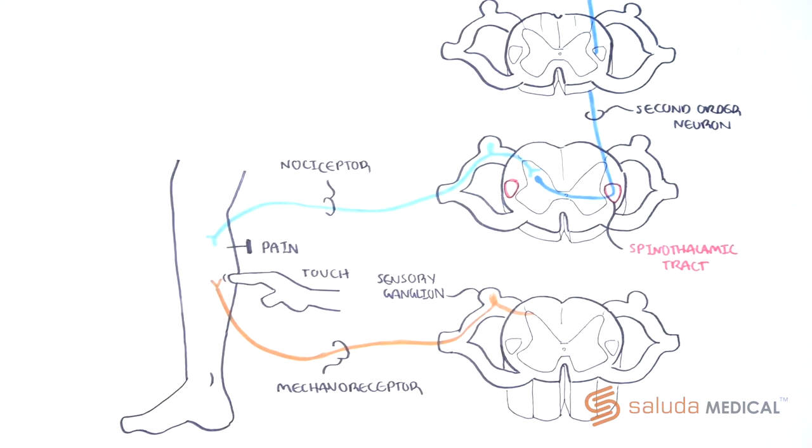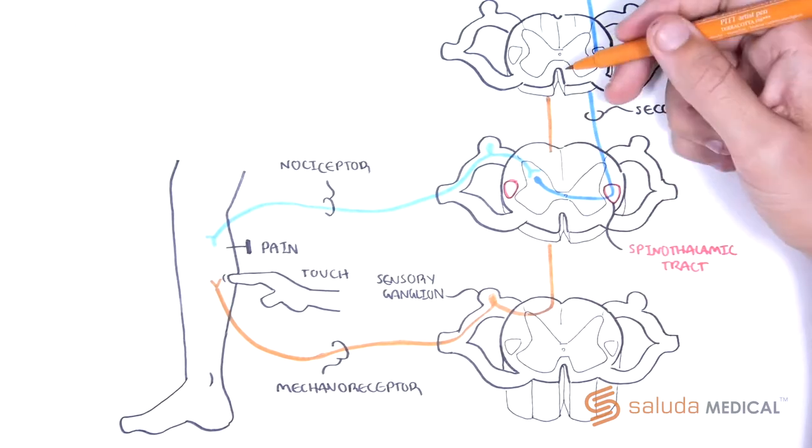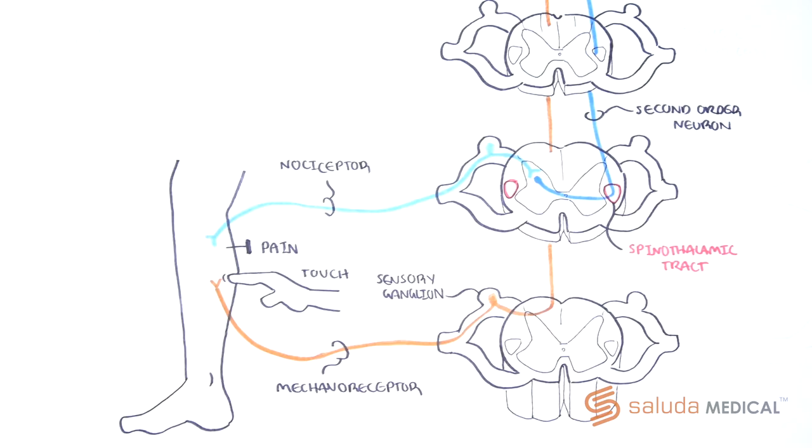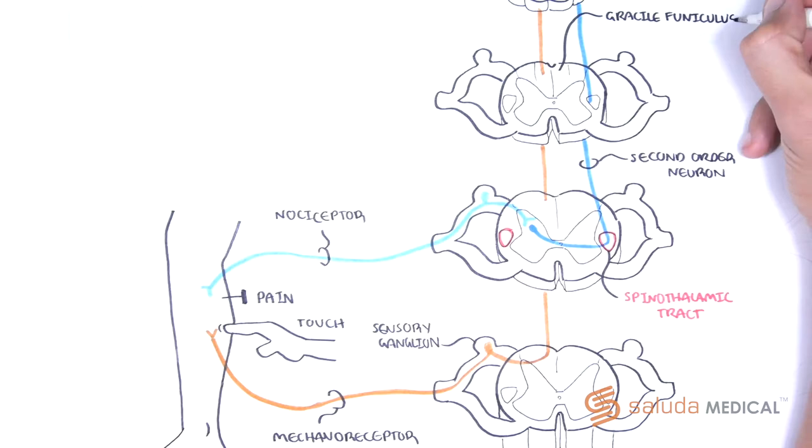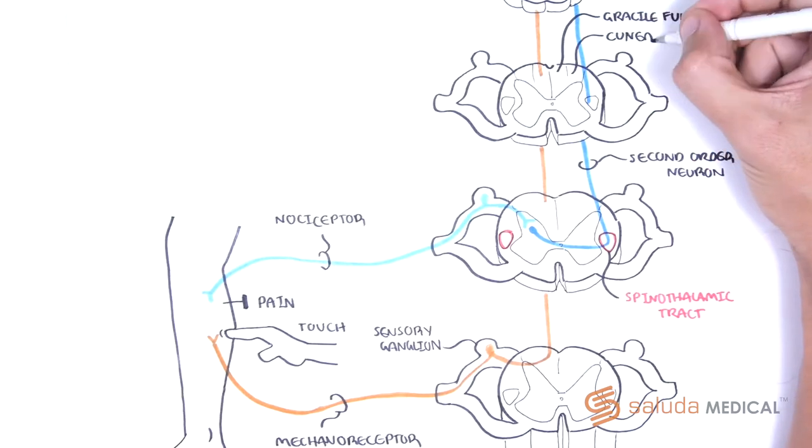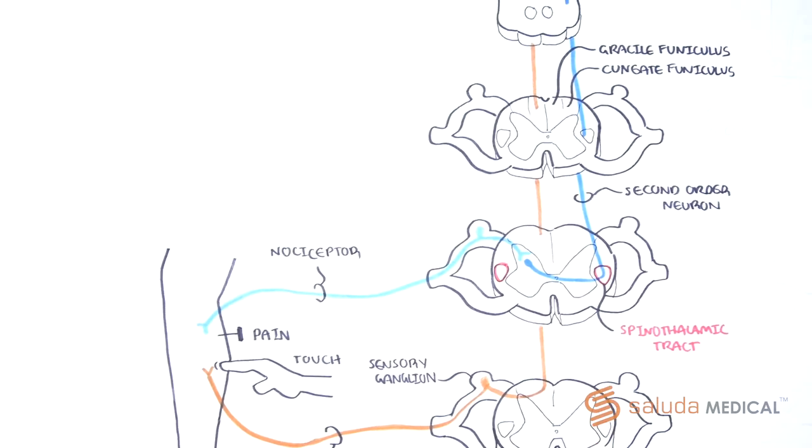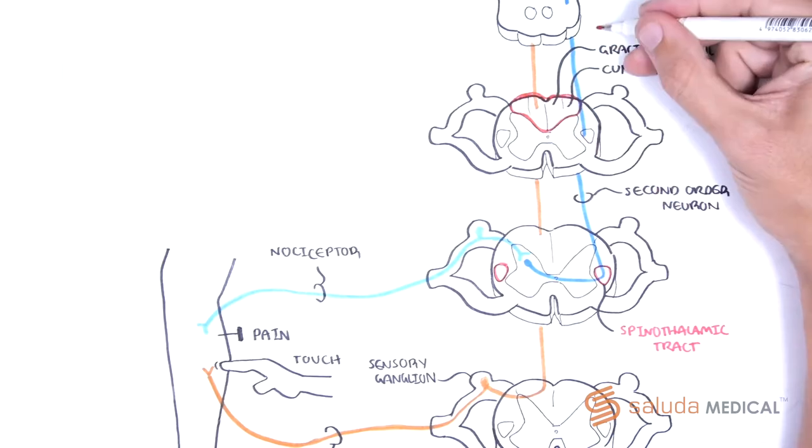Mechanoreceptors also form synapses in the dorsal horn, but do not immediately terminate here. Instead mechanoreceptor fibres enter the most posterior structures of the spinal cord, which are the white matter of the cuneate and gracilae funiculi. These are collectively referred to as the dorsal columns, and ascend towards the brain.